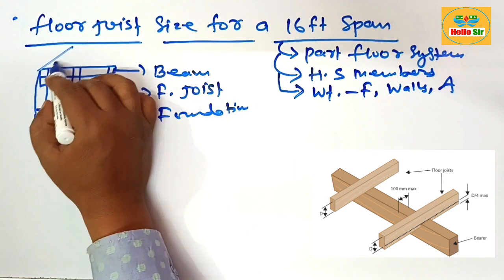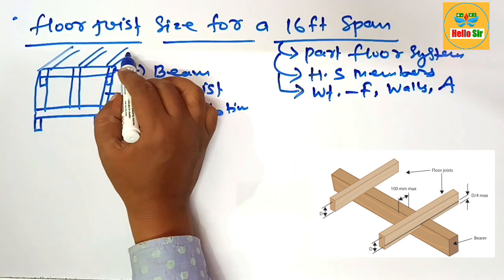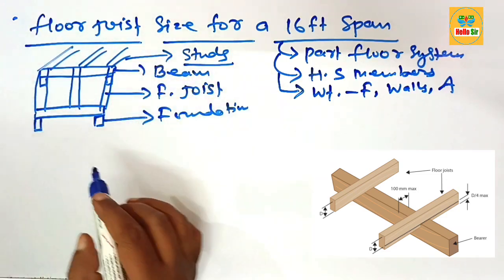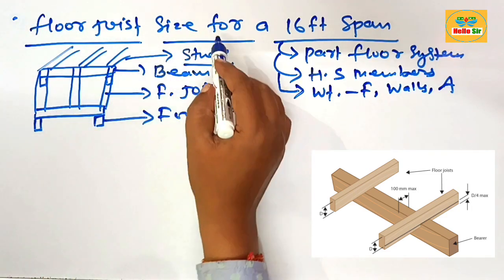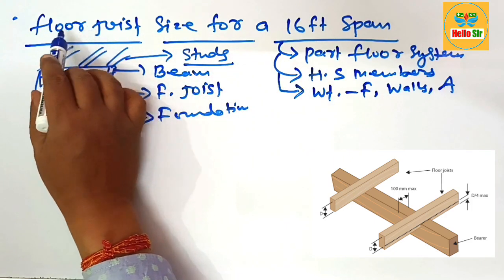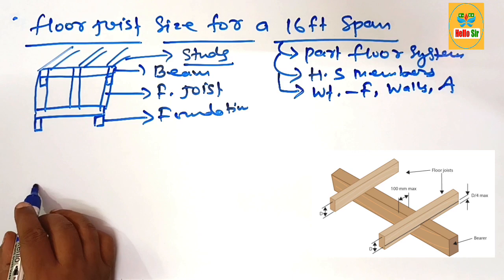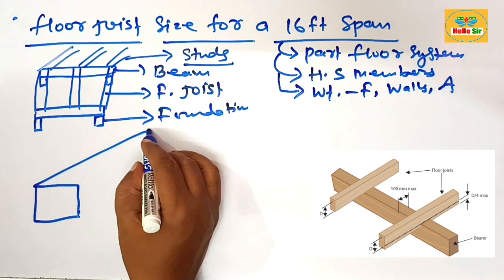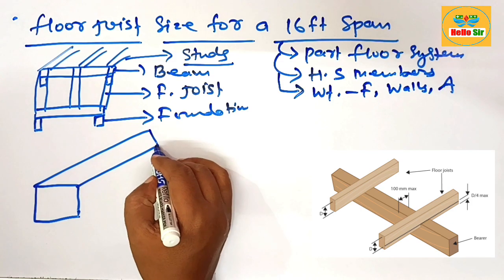And wall studs like that—this will be your wall studs. First, make a rough diagram to understand the width, depth, and span of floor joists. Suppose this is a rough diagram to understand the dimensions for the floor joist.